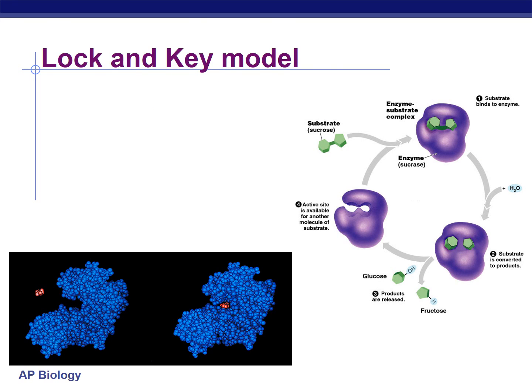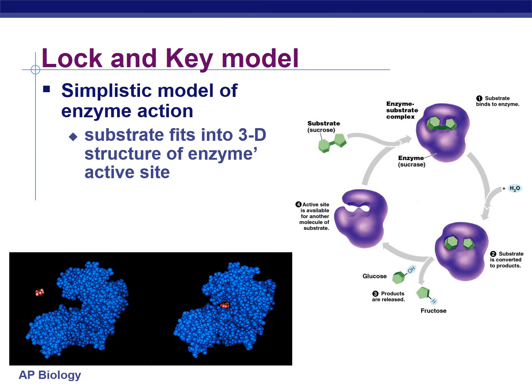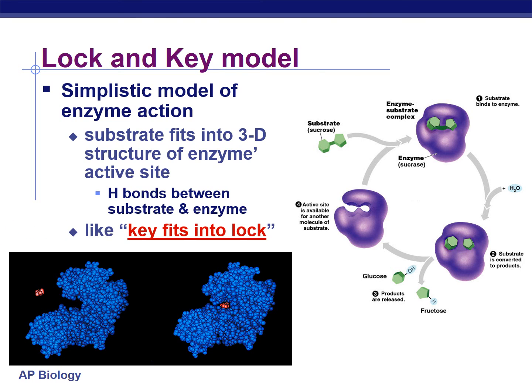When describing the mechanisms of enzyme action, we use the lock and key model. It's a little simplistic, but it does work because it involves how the 3D structure of the enzyme and the substrate need to fit together in a shape-to-shape interaction to allow hydrogen bonds between the substrate and the enzyme to form. The key fits into the lock — the enzyme would be like the key and the substrate would be like the lock.